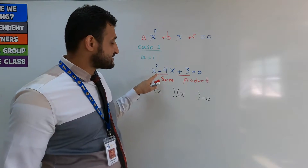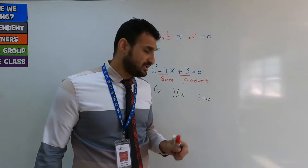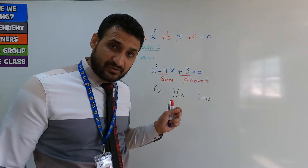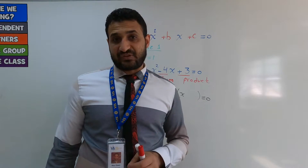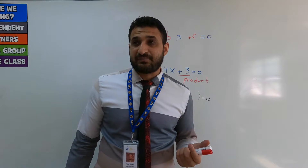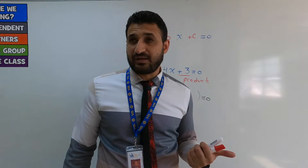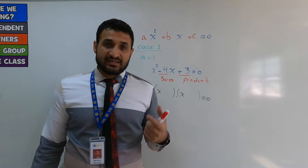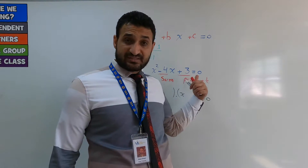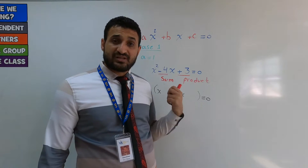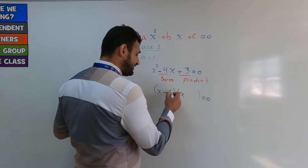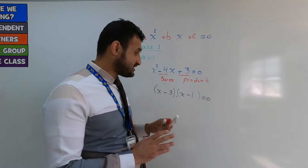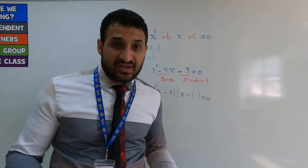Look for two numbers that add to negative 4 and multiply to give 3. The numbers are negative 3 and negative 1: negative 3 times negative 1 is 3 (product is 3), and negative 3 plus negative 1 is negative 4 (sum is negative 4). So you've factored the quadratic into two brackets.